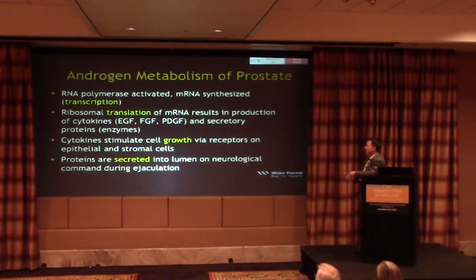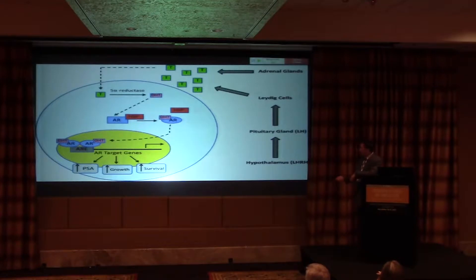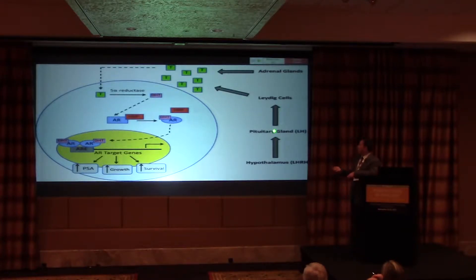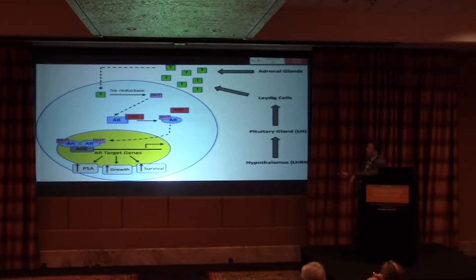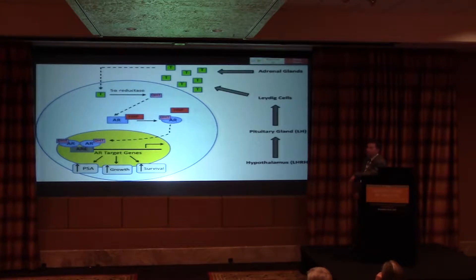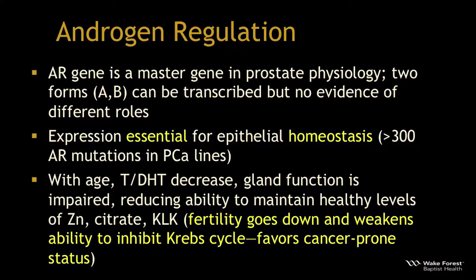These cytokines stimulate cell growth via receptors on both the epithelium and stromal cells. Proteins are secreted into the lumen following neurological stimulation at ejaculation. In this pathway: GnRH (sometimes called LHRH) from the hypothalamus stimulates the pituitary to release luteinizing hormone, which goes to the testes where Leydig cells release about 90 percent of the man's testosterone. About 10 percent comes from the adrenal glands. Testosterone is then converted to dihydrotestosterone by 5-alpha reductase, which binds to the androgen receptor, displacing heat shock protein, enters the nucleus, and triggers transcription and translation.